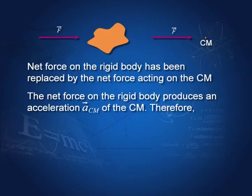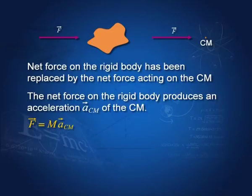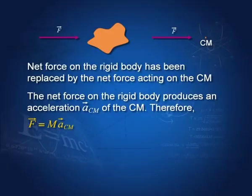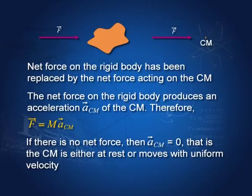What is the importance of the centre of mass? The whole body can be replaced by just one point — the centre of mass — and the effect of forces on the body can be studied there. If a force F produces an acceleration A_CM in the centre of mass of a rigid body, then F = M·A_CM, where M is the mass of the rigid body. If there is no force, F = 0, and A_CM is either zero or constant — meaning the centre of mass is either at rest or moves with uniform velocity.